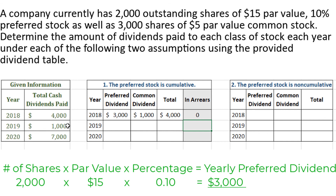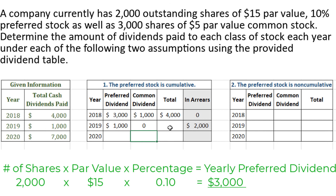In 2019, $1,000 in total dividends were paid. Since preferred shareholders have the preference for receiving dividends first, the entire $1,000 goes to preferred shareholders. Now the preferred dividend is supposed to be $3,000, but there wasn't even $3,000 total paid in dividends, so we can't pay them $3,000. That means preferred shareholders are missing out on $2,000 of the preferred dividend, so we have $2,000 of dividends in arrears. There's no leftover money for common shareholders, so they get $0. The total is $1,000.